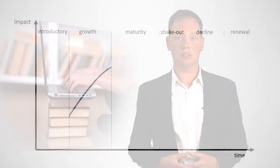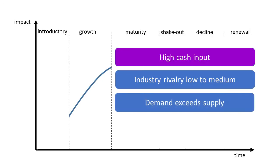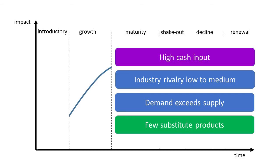Industries in the growth phase are often using a lot of cash to further develop their products and services and expand their businesses. Demand should still exceed supply and industry rivalry is not yet high. Substitute products may have emerged but have not established themselves yet, so the players in the industry are able to increase profitability.